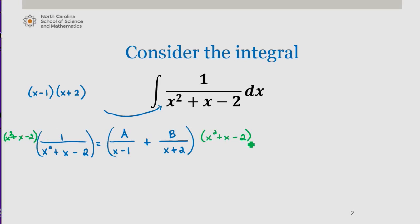I obtain the following: 1 equals a times, now since this denominator can also be written as x minus 1 times x plus 2, we see that when we distribute it with this term, a over x minus 1,